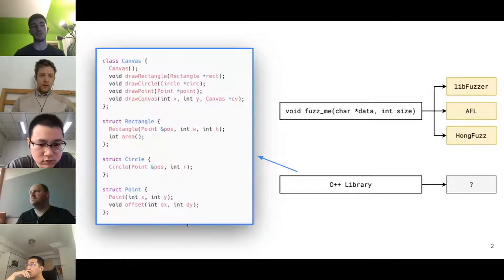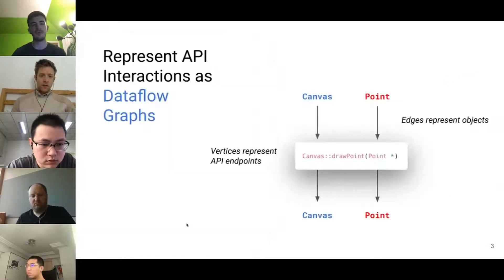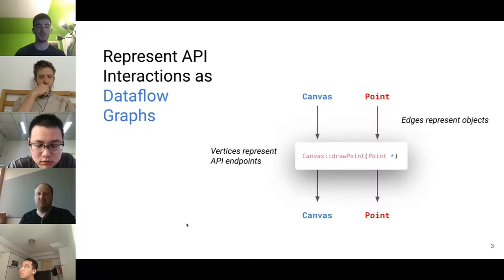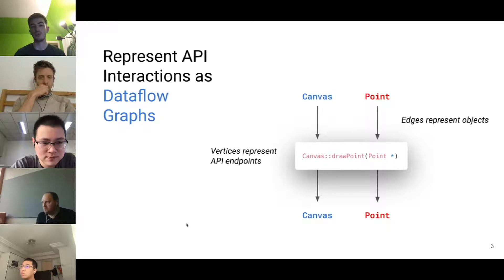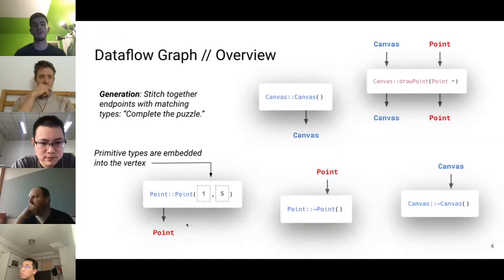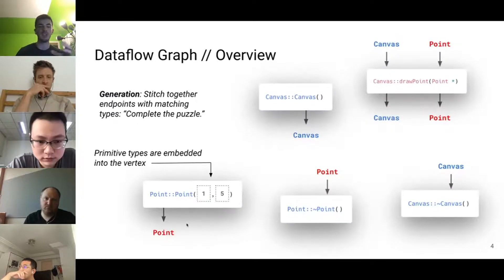Many APIs — for example C++ libraries — don't have a convenient single entry point accepting a big chunk of data. Instead, we want to test interactions between many small functions. GraphFuzz represents API interactions as data flow graphs: vertices represent API endpoints (functions), and edges represent objects passed between endpoints — created by some and consumed by others. For example, a method on a canvas object needs a canvas and a point as inputs; after invocation, both can be reused as outputs.